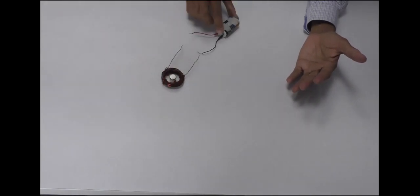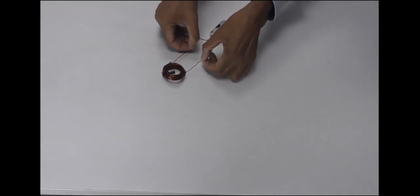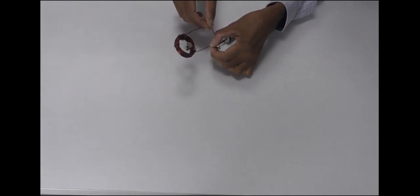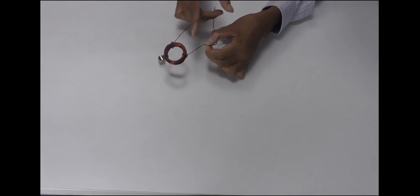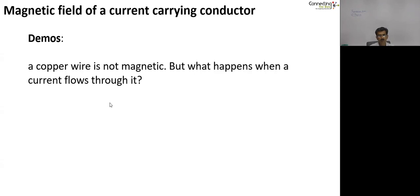But what happens when we pass an electric current through the copper wire? And how do we pass an electric current with a couple of batteries? When we pass an electric current through the wire, you can see clearly that there is a force of attraction. And when the current stops flowing, there is no longer a force of attraction.